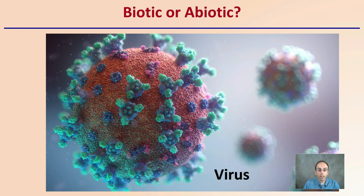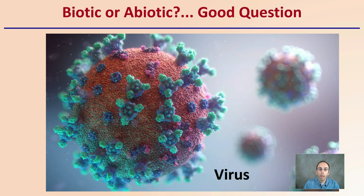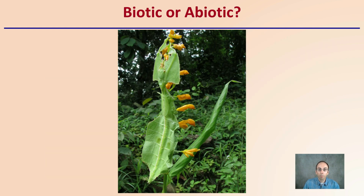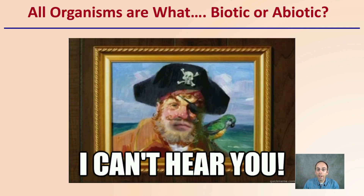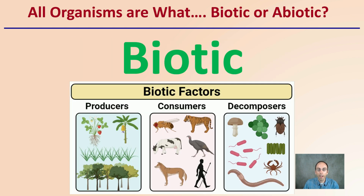Looking at this virus particle here — viruses are basically DNA wrapped in a protein coat. They can multiply and cause severe disease, so what category do you classify them as? That's something we'll discuss in class. Next, this initially looks like a leaf, but it's actually an insect that has developed over time to look like a leaf. Whether you saw it as a leaf or as an insect, you should classify it as biotic.